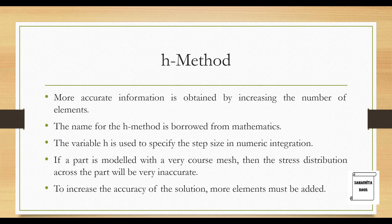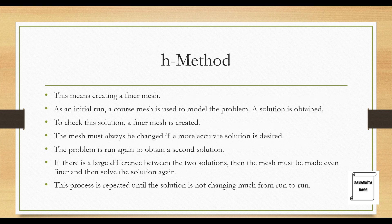We have some more things to discuss about the H method and the P method. First we'll discuss about the H method. More accurate information is obtained by increasing the number of elements. The name for the H method is borrowed from mathematics. The variable h is used to specify the step size in numeric integration. If a part is modeled with a very coarse mesh then the stress distribution across the part will be very inaccurate. To increase the accuracy of the solution, more elements must be added. This means creating a finer mesh. As an initial run, a coarse mesh is used to model the problem. A solution is obtained. To check the solution, a finer mesh is created. That is what we generally do when we are solving any Ansys problem.